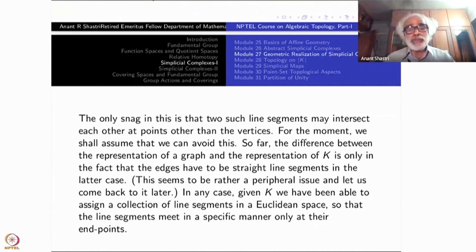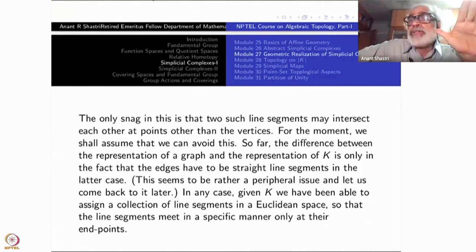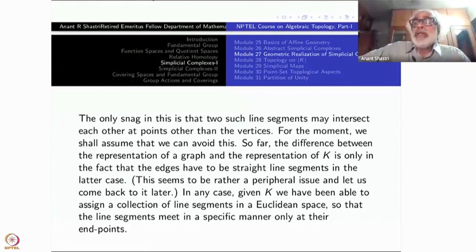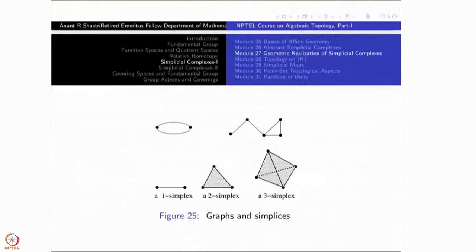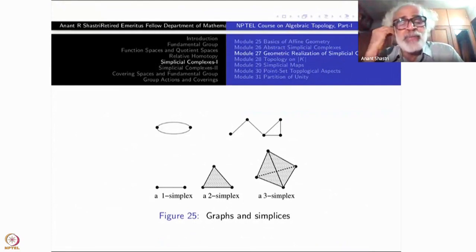We want to do this independently of the choice of elements — some kind of universality should be brought in. So let us go again slowly. Here are some examples of representations of a graph and simplices. The first example is a graph but not a Simplicial Complex: if it were a Simplicial Complex, two vertices can have only one single edge between them, so a multigraph is not a Simplicial Complex.